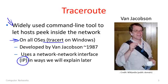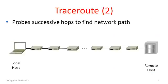For the purpose of this segment, you don't really need to understand how TraceRoute works. It's really just a program that will run and reveal a little bit of information about what's inside the network. TraceRoute probes successive hops in order to find the network path between a host doing the probing on the left and a destination host on the right — for example, some remote web server you want to reach.